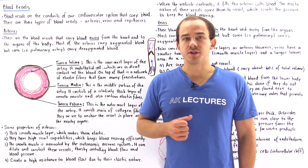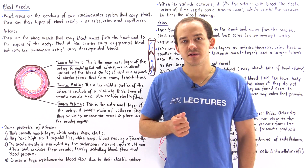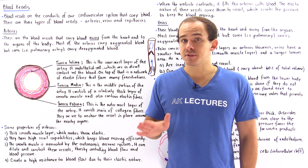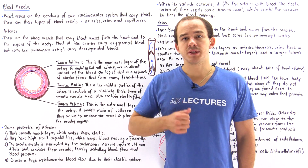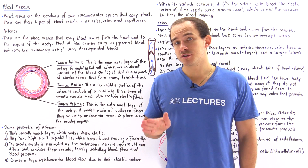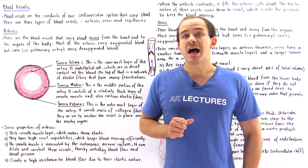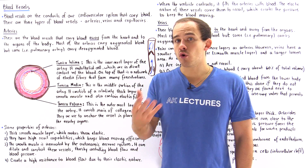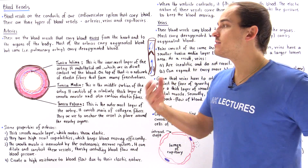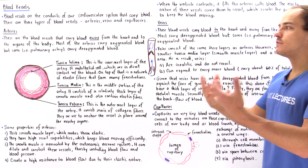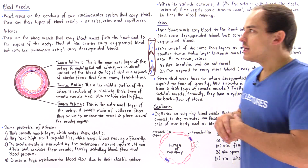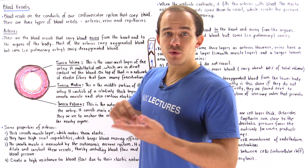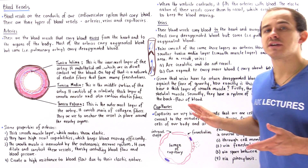Blood vessels are the conduits of our cardiovascular system, meaning they create a network of pipes inside our body that allows the movement of our blood. That's important because blood carries not only nutrients, electrolytes, minerals and vitamins, but it also carries hormones, waste products and different types of cells to different parts of our body. Now blood vessels come in three different types: we have arteries, veins, and capillaries.